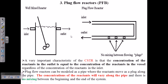Let us talk about the third kind of bioreactor: the plug flow bioreactor. This is totally different from the two types of bioreactors we have talked about before — one is the air lift, another one is the stirred tank, and also the tower reactor.